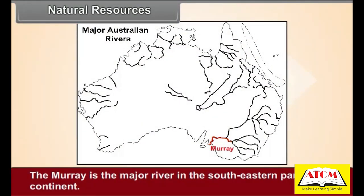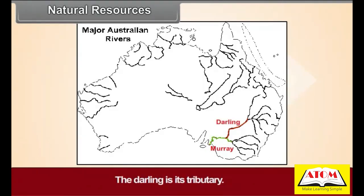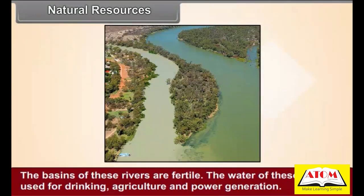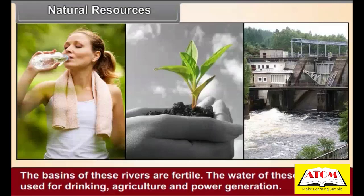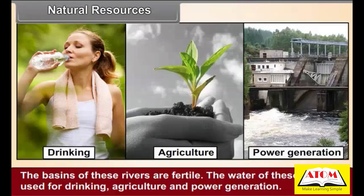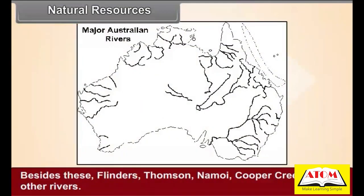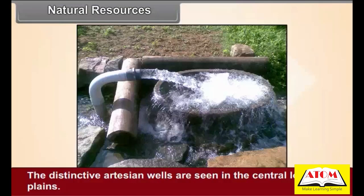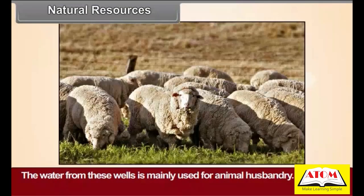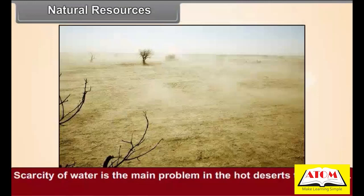The Murray is the major river in the southeastern part of the continent, and the Darling is its tributary. The basins of these rivers are fertile and their water is used for drinking, agriculture, and power generation. Other rivers include the Flinders, Thompson, Namoi, and Cooper Creek. Distinctive artesian wells are found in the central low-lying plains, mainly used for animal husbandry. Scarcity of water is the main problem in the hot deserts to the west.